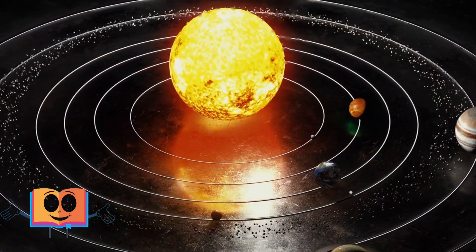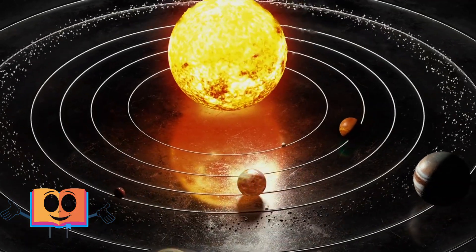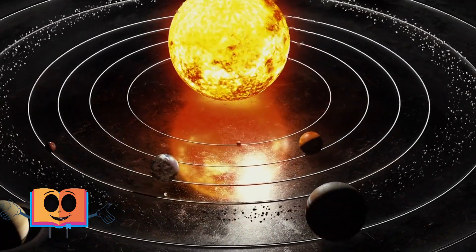Inner planets, like Earth, are rocky, while outer planets, like Jupiter and Saturn, are mostly composed of gases.